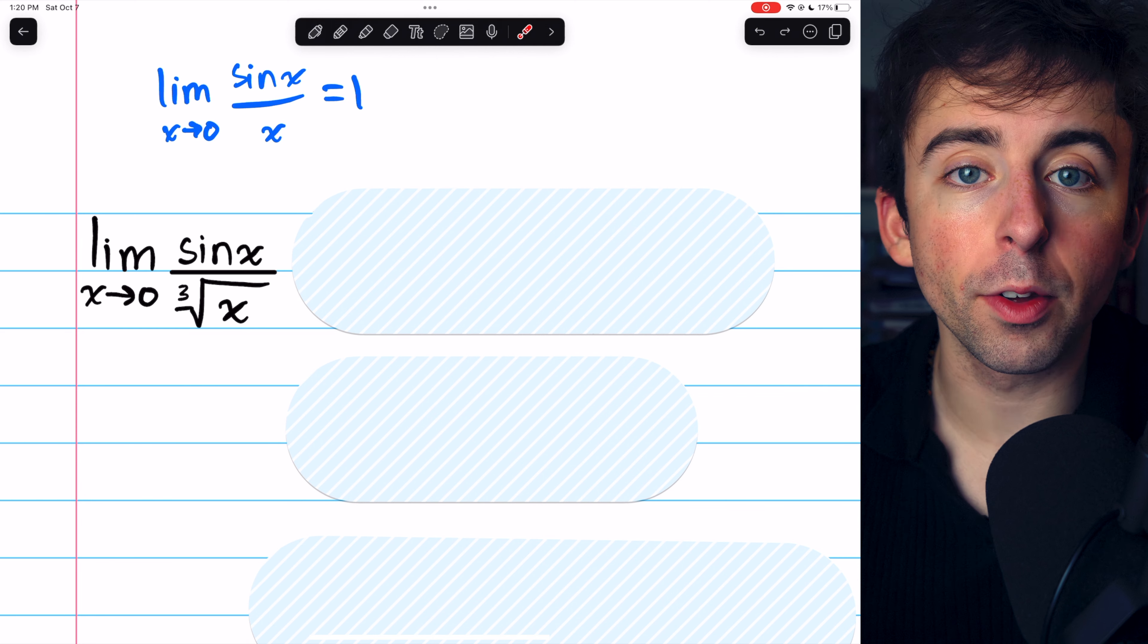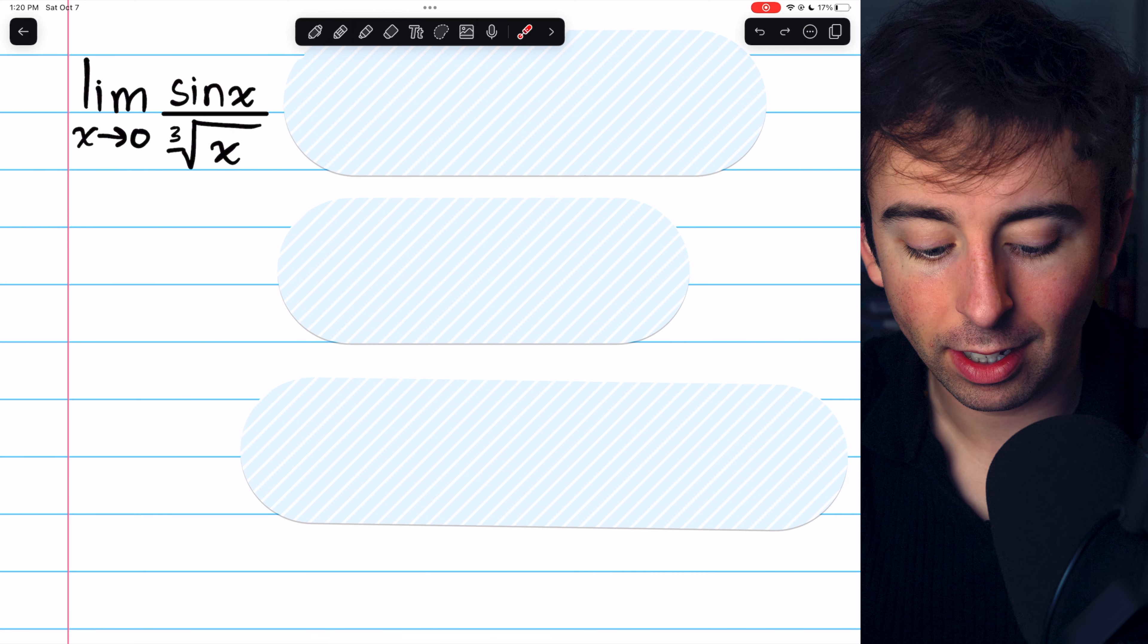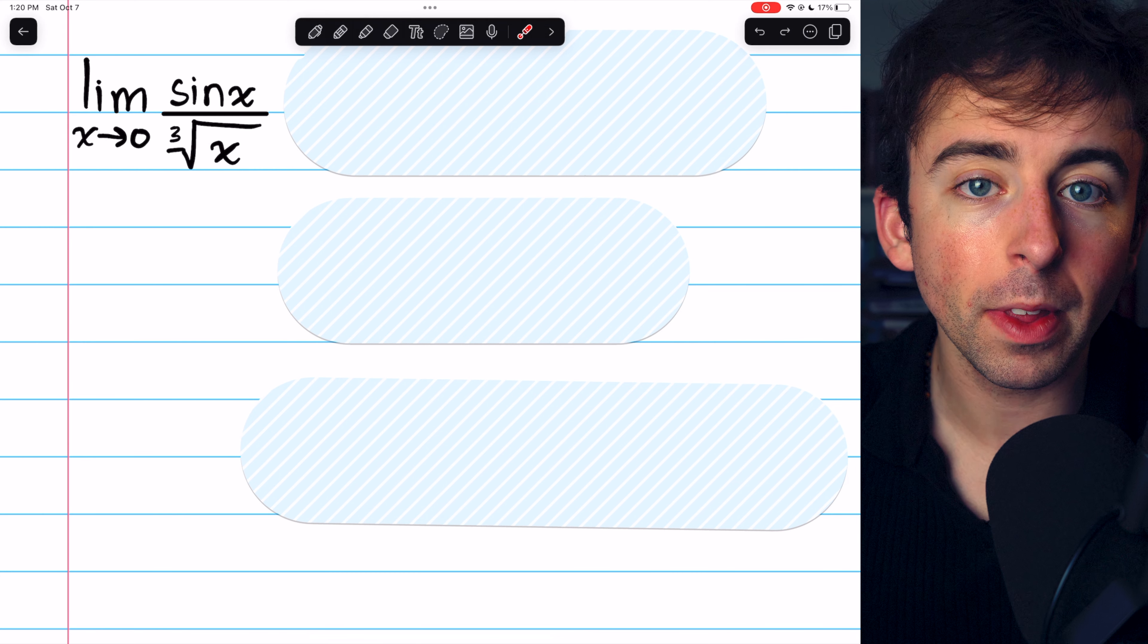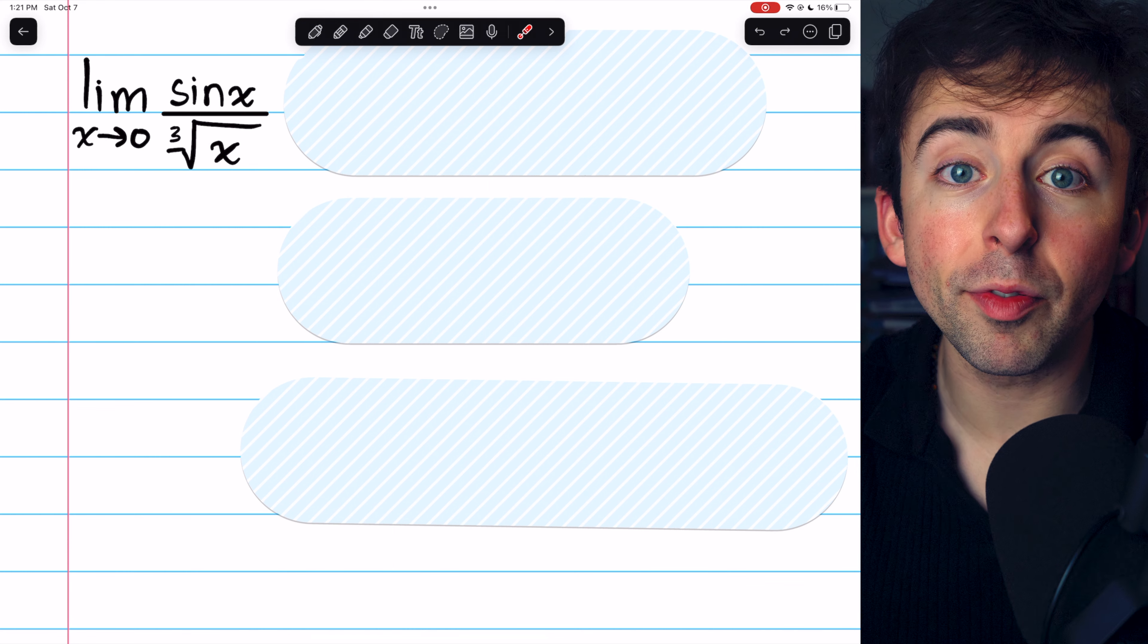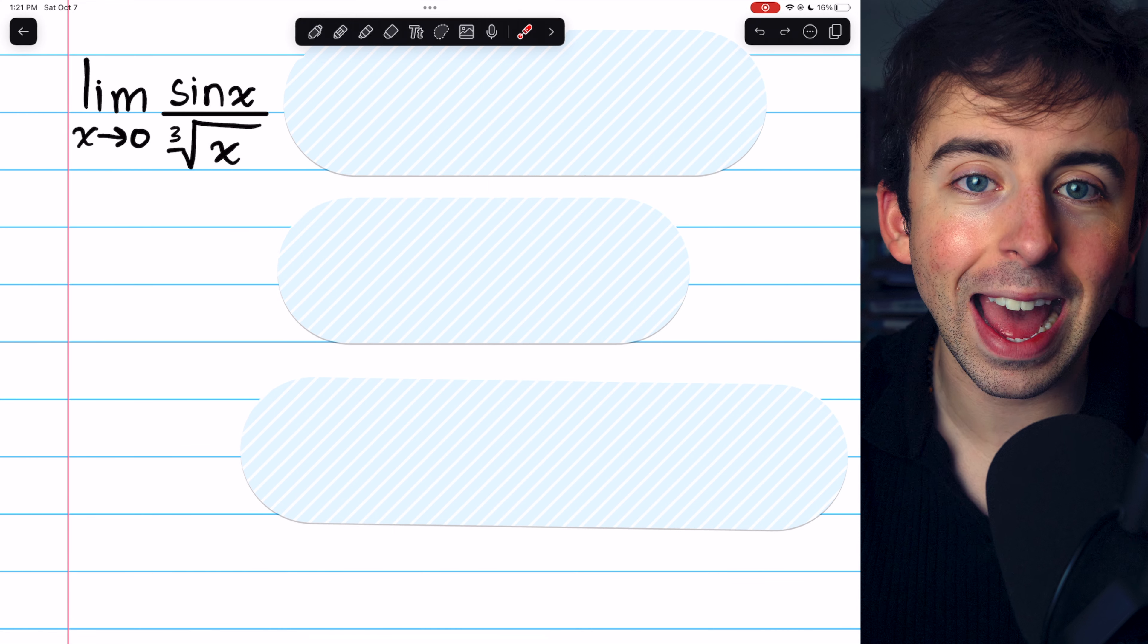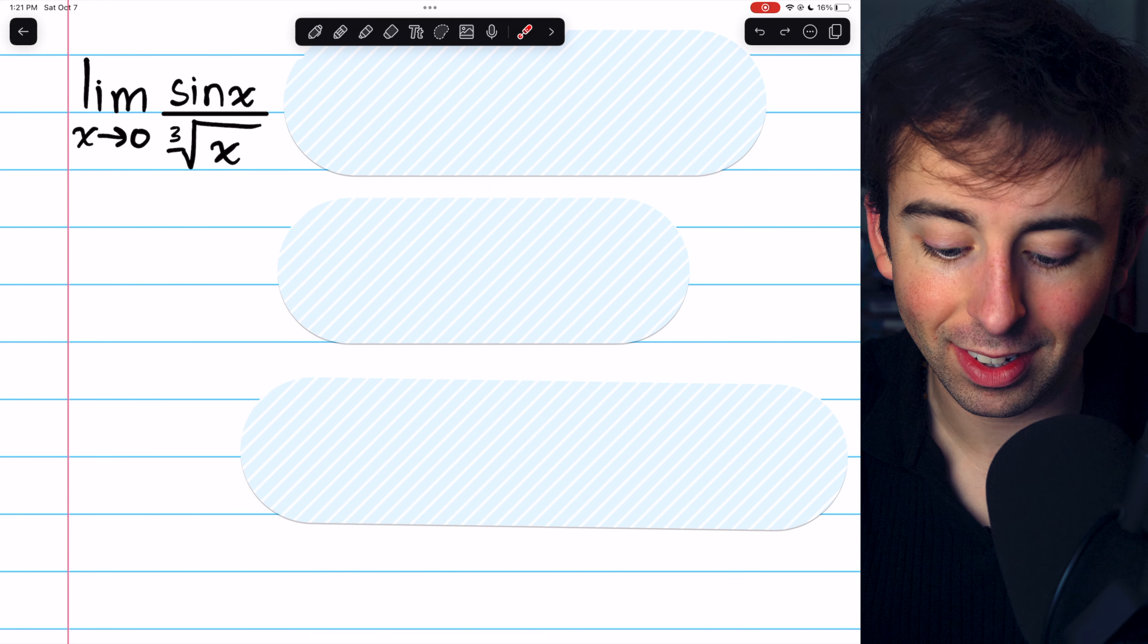We would like to get an x in the denominator, because we know what sine x over x is when x approaches 0. In order to do that, we'll have to multiply by the cube root of x squared over the cube root of x squared. That way, we're just multiplying by 1, and in the denominator, we'll have three factors of cube root of x, which will be just x.